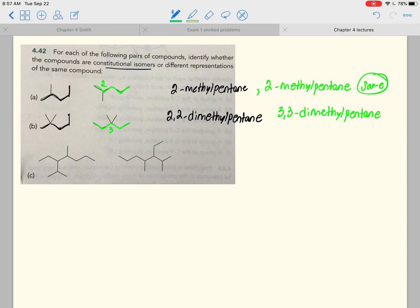Now you could count the total number of carbons, and you'll see that it's going to be 7. And so these two molecules are constitutional isomers.